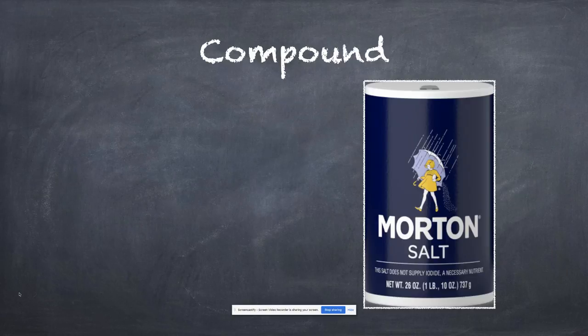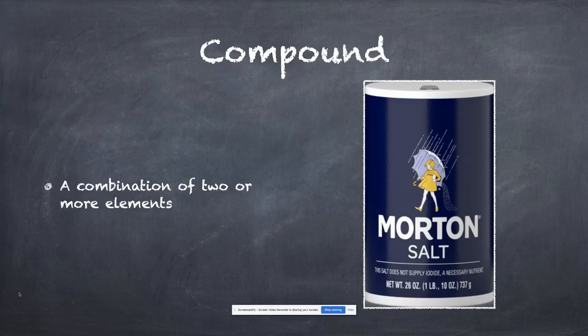A compound. I figured you're probably familiar with table salt. It's a combination of two or more elements. This sounds like the definition of a molecule, but it's not the same because now we're talking about two or more elements, not two or more atoms. All compounds would basically be molecules, but not all molecules would be compounds.